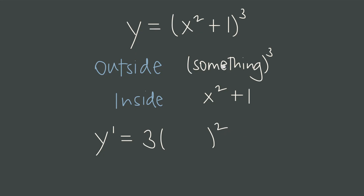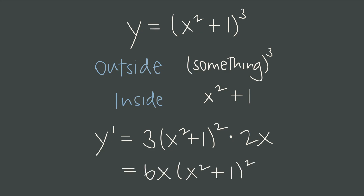When we take the derivative of the outside function, we ignore what's inside. This is just a power function — something raised to the third power. By the power rule, we bring the 3 down in front and subtract one from the exponent to get 2. So we differentiate the outside, leaving the inside alone without touching it. But then we multiply by the derivative of the inside function. The derivative of x squared plus 1 is 2x, so we multiply by 2x, and then all that's left to do is simplify.